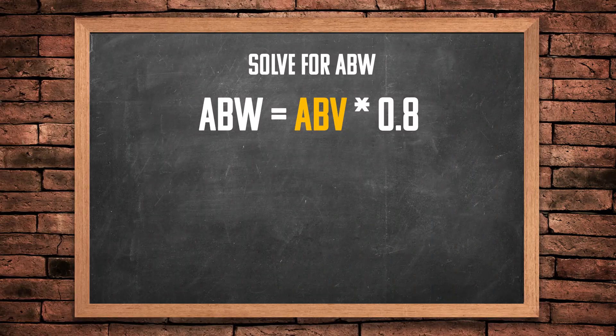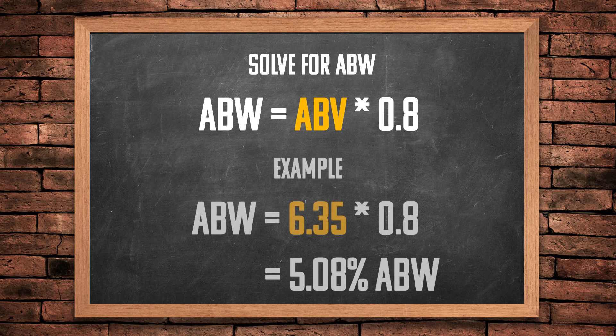To solve for alcohol by weight, it's as simple as taking your alcohol by volume and multiplying by a factor of 0.8. In our example, alcohol by weight equals 6.35 multiplied by 0.8, which gives us 5.08% alcohol by weight.